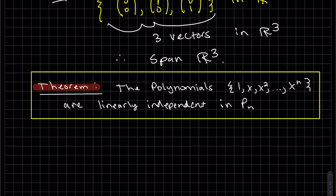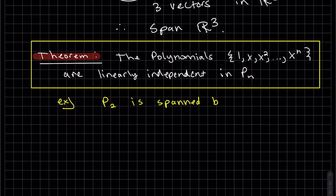So if we have a set of polynomials, they are linearly independent in Pn, if it goes all the way up to Xn. So here we have, as an example, P2 is going to be also spanned by these three, since these three are independent.